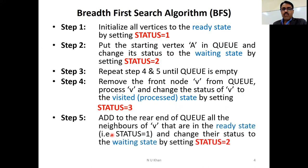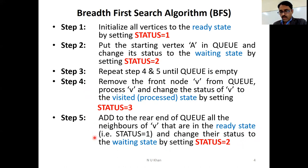Step five: add to the rear end of the queue all the neighbors of V that we have visited. We will add all adjacent nodes that are in the ready state, and change their status from 1 to 2, that is the waiting state. These five steps are important. Let us see with the help of an example.